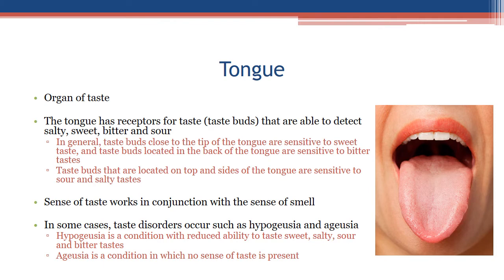Tongue — organ of taste: the tongue has taste buds that are able to detect salty, sweet, bitter, and sour flavors. Taste buds near the tip of the tongue are sensitive to sweet tastes, those at the back are sensitive to bitter, and those on the top and sides are sensitive to sour and salty. Taste disorders include hypogeusia, a reduced ability to taste, and ageusia, a complete absence of taste.